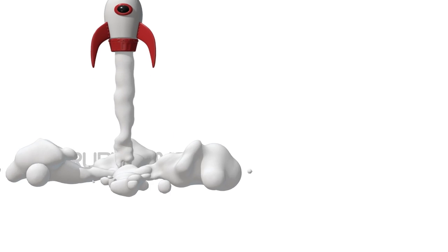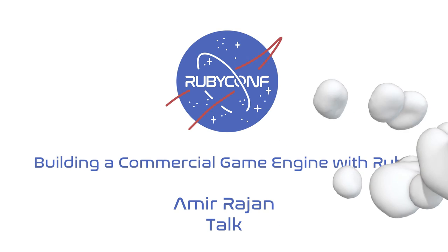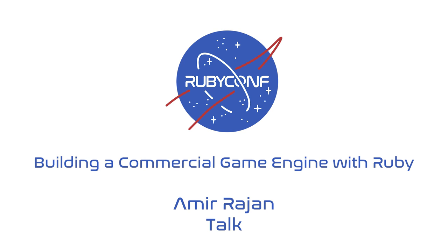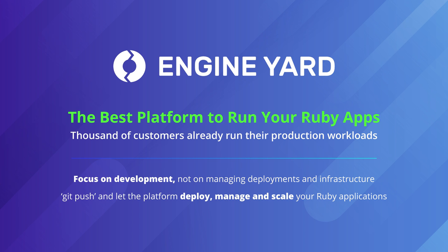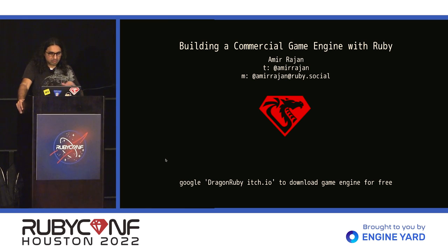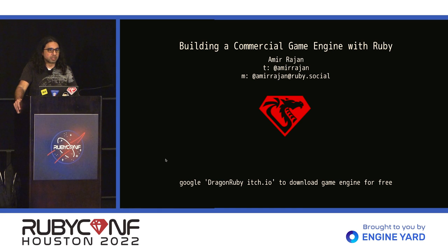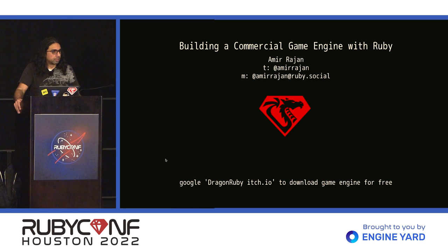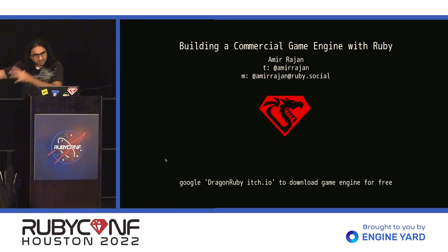Ready for takeoff. Hopefully everyone's in the right place — building a commercial game engine with Ruby. Right now the standard license for the game engine is available for free. You can download it, just Google DragonRuby itch.io. You'll get a full commercial license, use it for whatever you want, make money off of it, get a huge studio, hire a bunch of people, then buy the pro license. That's the plan.